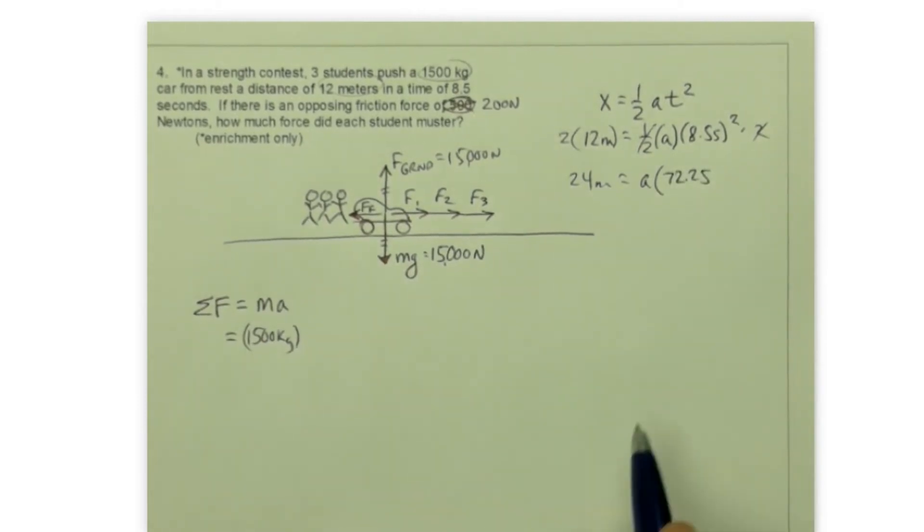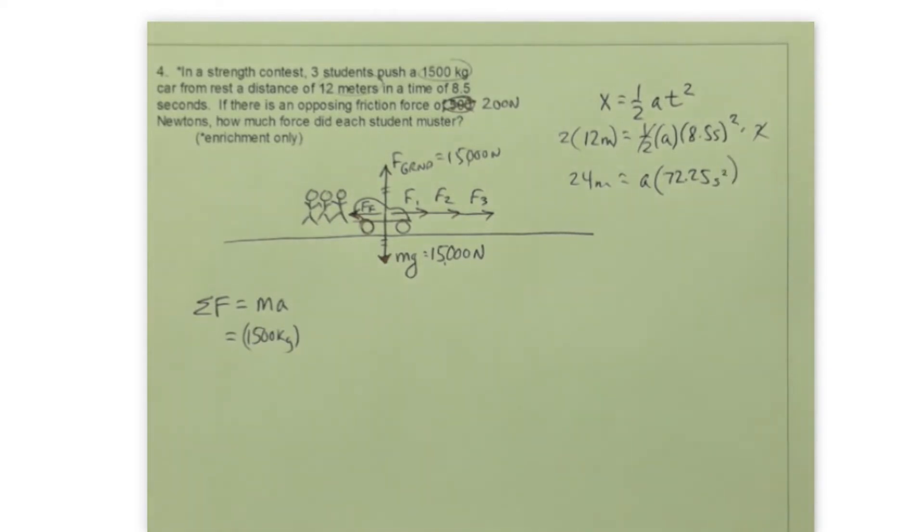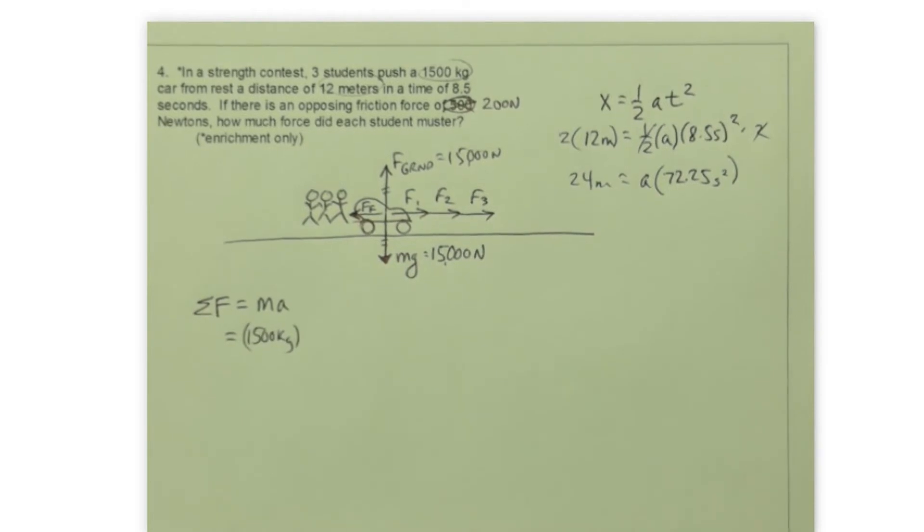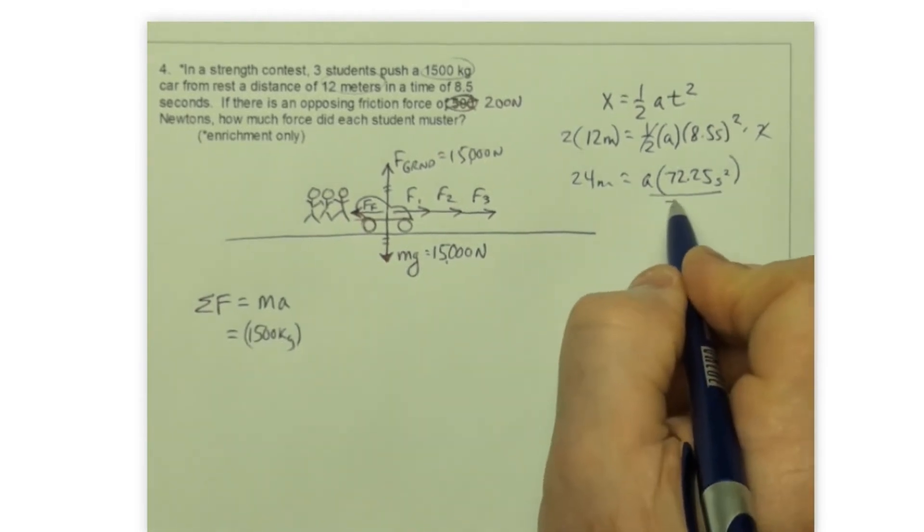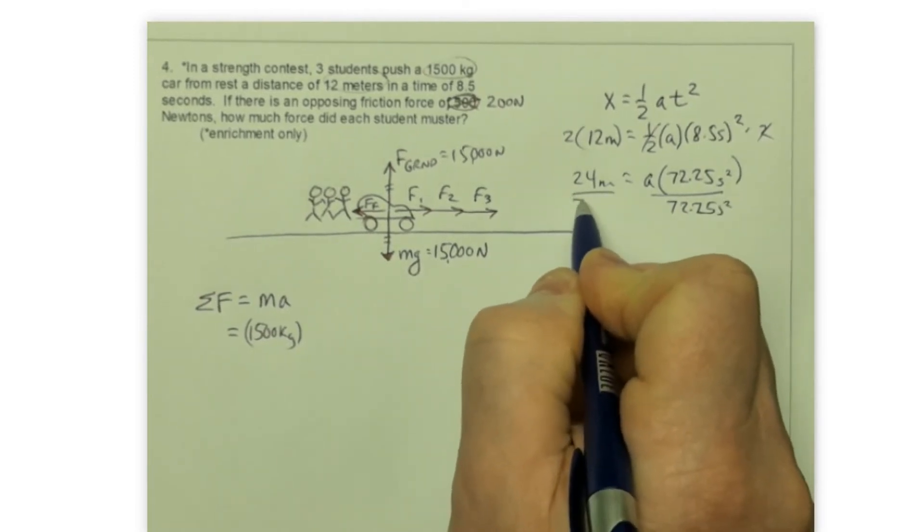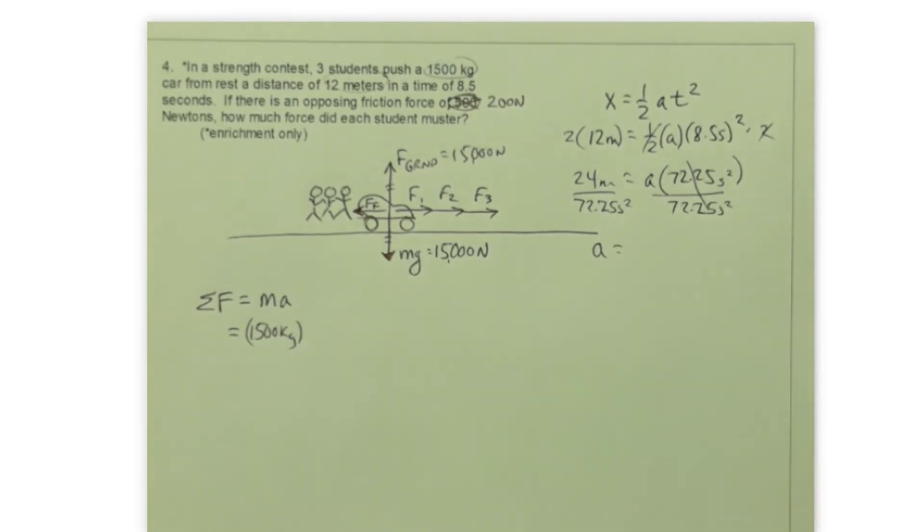And don't forget, the units are also squared on that. So even though I write that as second squared, I'm not squaring that number anymore. That number has already been squared, but the units themselves are squared as well. So now I divide both sides by 72.25.